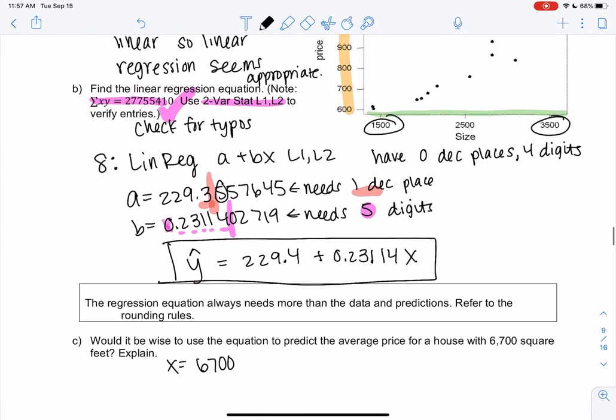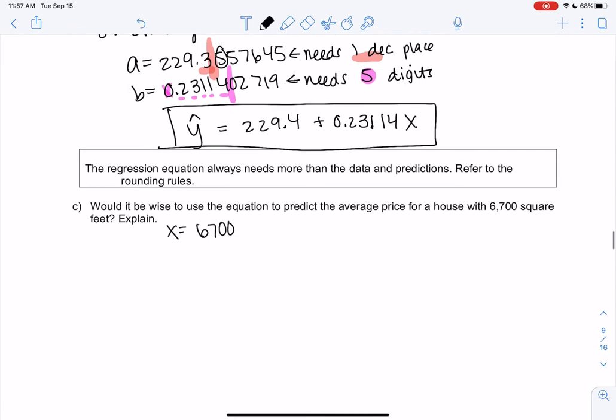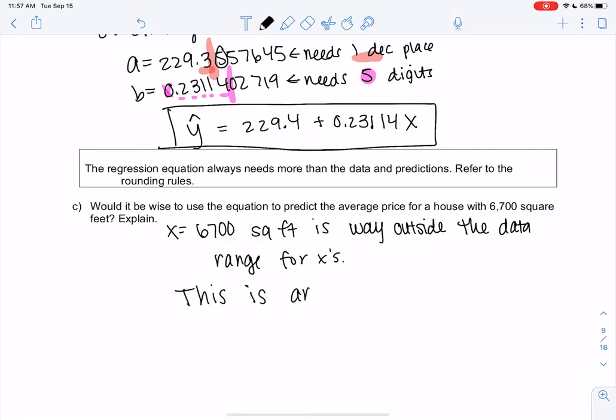So 6,700 square feet is way outside the data range for X's because we're looking at square feet. This was called an extrapolation.